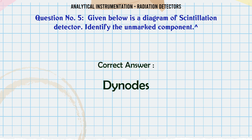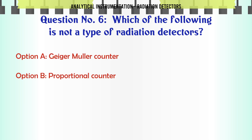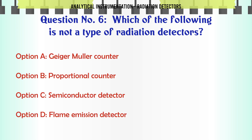Which of the following is not a type of radiation detector? A. Geiger-Müller Counter. B. Proportional counter. C. Semiconductor detector. D. Flame emission detector.